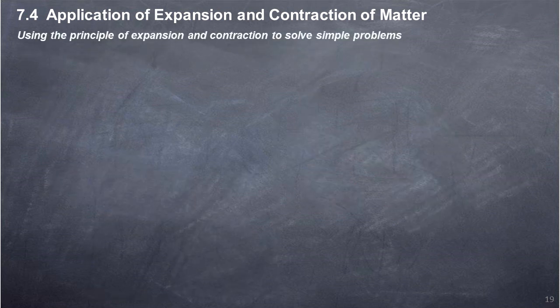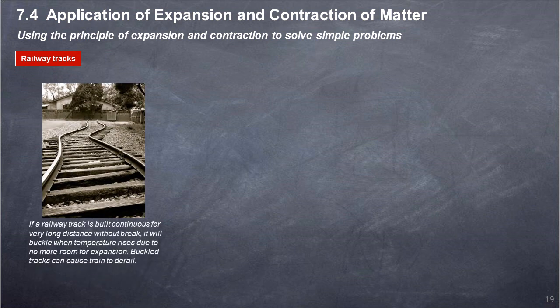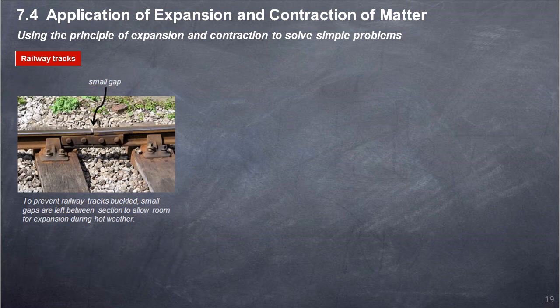Using the principle of expansion and contraction to solve simple problems. Railway tracks: if a railway track is built continuously for a very long distance without a break, it will buckle when temperature rises, due to no room for expansion. Buckled tracks can cause trains to derail. To prevent this, small gaps are left between sections to allow room for expansion during hot weather.